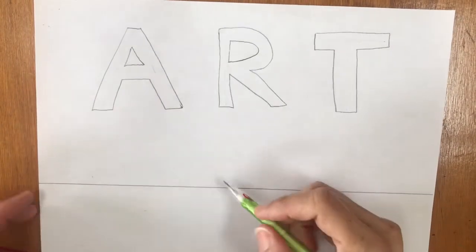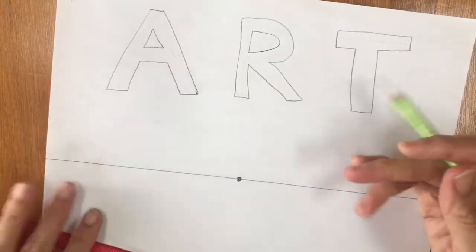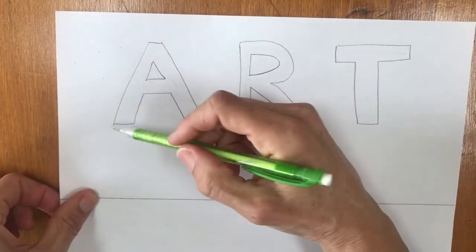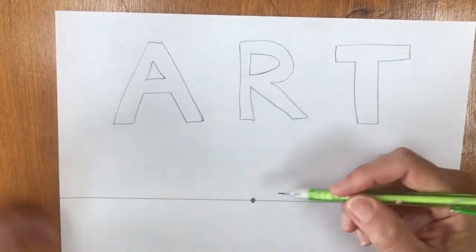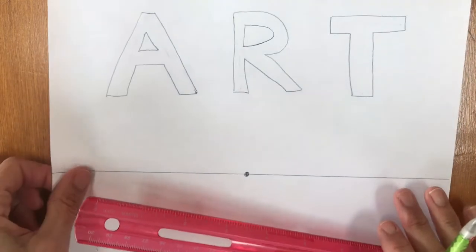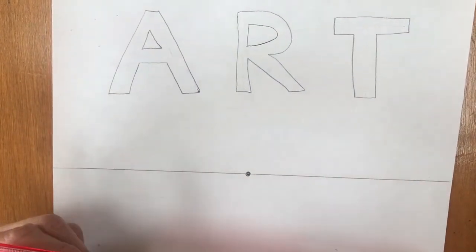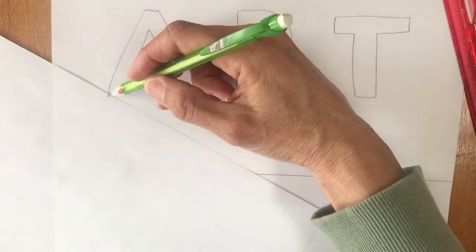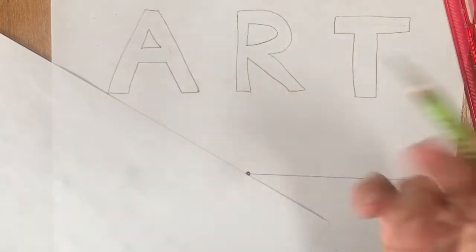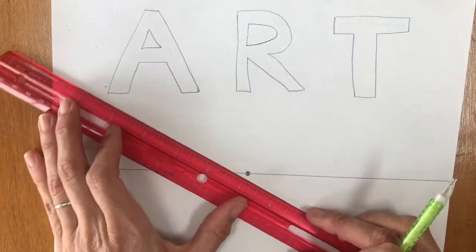So my vanishing point is in the middle like I said and I am going to now start connecting the corners of my letters to my vanishing point. It's really important like we talked about a couple weeks ago that you use a straight edge to do this. If you don't have a ruler you can always just use another piece of paper and line that up and use the edge of the paper or the edge of a book. I do have a ruler so I'm going to use that.